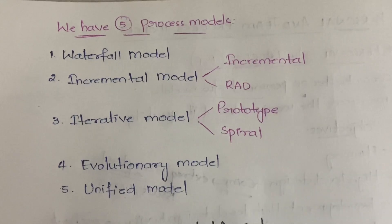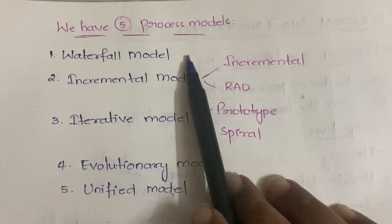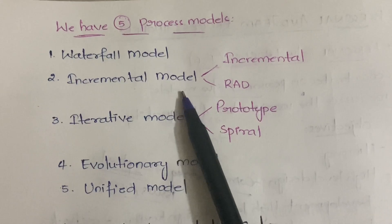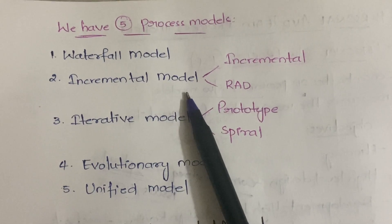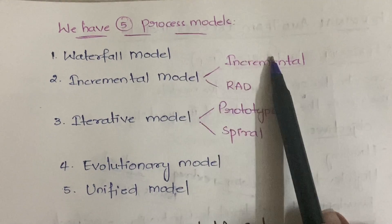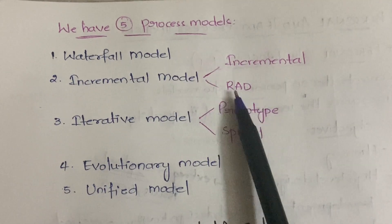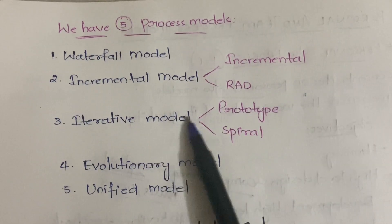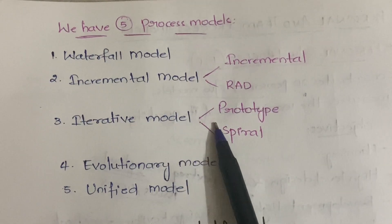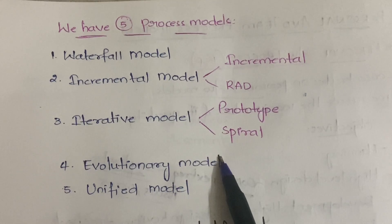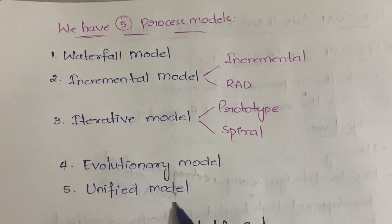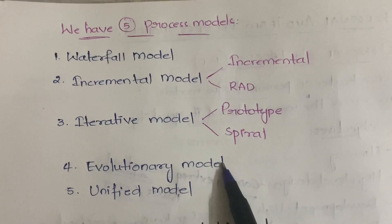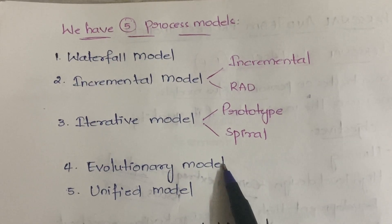We actually have five process models. The first is the Waterfall Model, which is the simplest and oldest. Second is Incremental, which includes Incremental and RAD (Rapid Application Development). Third is the Iterative Model, which includes Prototype and Spiral. Fourth is the Evolutionary Model. Fifth is the Unified Process Model. These are the five process models and I'll discuss each in detail in separate videos.